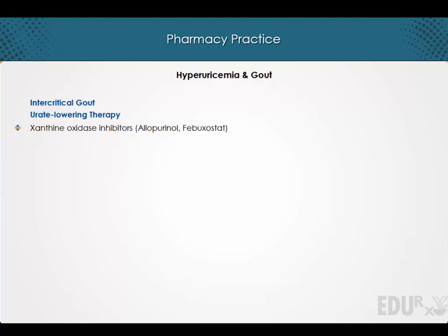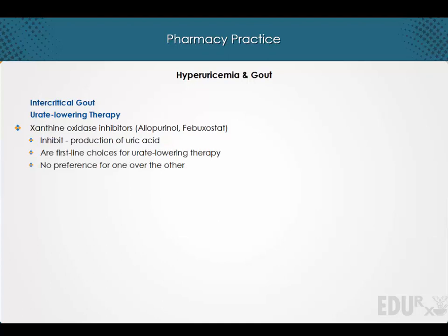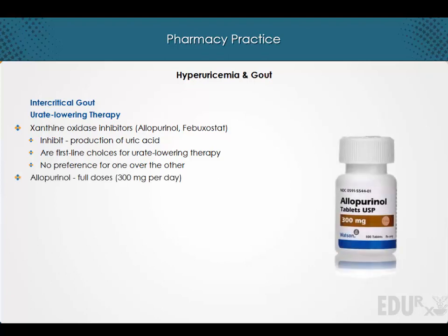Xanthine oxidase inhibitors allopurinol and febuxostat inhibit the production of uric acid. Both allopurinol and febuxostat are first-line choices for urate-lowering therapy, with no preference for one over the other. Full doses of allopurinol reduce serum urate concentrations to normal in about 85% of patients with gout.